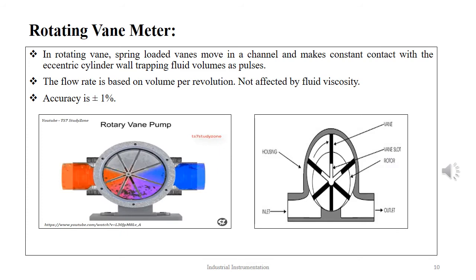The third type in the category of positive displacement flow meter is the rotating vane meter. Here, spring-loaded vanes slide in and out of a channel in a rotor so that they make constant contact with the eccentric cylindrical wall. When the rotor turns, a known volume of fluid is trapped between the two vanes and the outer wall. The flow rate is based on volume per revolution. This type is suitable for accurately measuring small volumes and is not affected by viscosity.